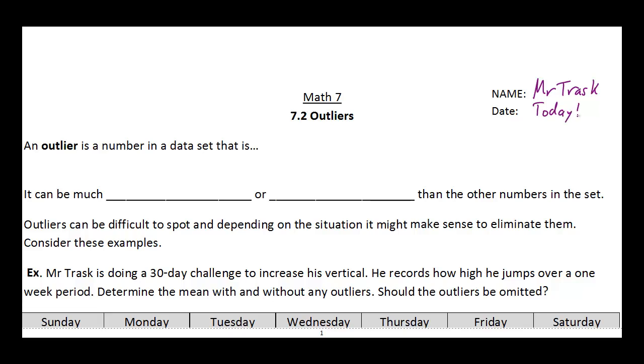Okay, so outliers is probably something you haven't seen before, but basically when we have a data set of numbers, an outlier is any number in that data set that is significantly different from the other numbers.